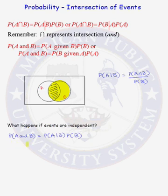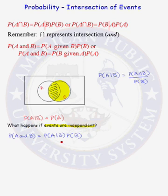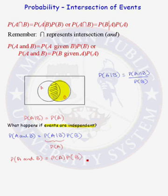Going back to the probability of the intersection of two events — what happens if the events are independent? When two events A and B are independent, the probability of A given B just equals the probability of A, because event B does not influence whether A occurs or not. So our equation simplifies: the probability of A and B equals the probability of A times the probability of B when events A and B are independent.